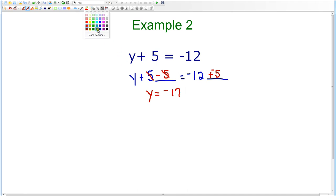Now, with most equations in algebra, it's always a good idea to check your answer to make sure that your answer is correct. My answer says y equals negative 17. So I'm going to go back to the original equation of y plus 5 equals negative 12. And I'm going to substitute negative 17 for y.